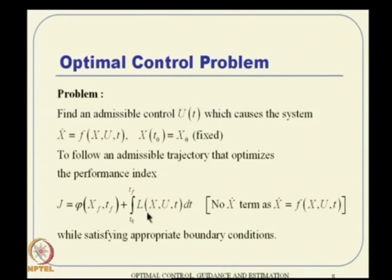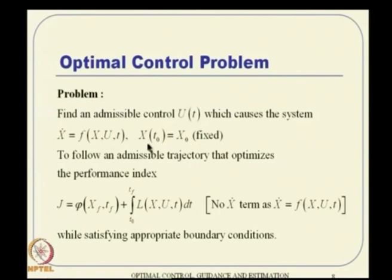You can have problems where x-dot appears in the cost function — especially in the LQR (linear quadratic regulator) class. But in general, most of the time it is sufficient to define the cost in terms of x and u, because once x and u are given along with initial conditions, x-dot is constrained by the state equation and there is no further freedom.